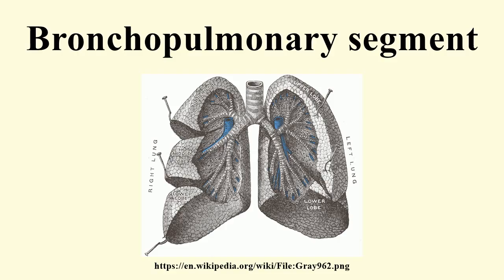There are ten bronchopulmonary segments in the right lung: three in the superior lobe, two in the middle lobe, and five in the inferior lobe. Some of the segments may fuse in the left lung to form usually eight to nine segments.